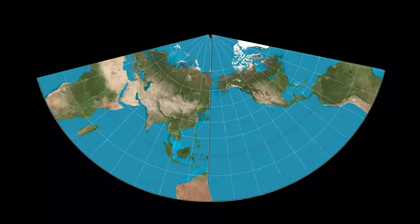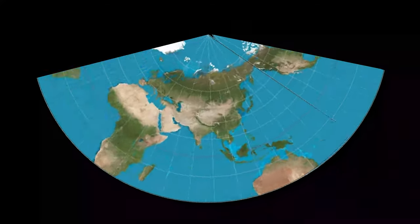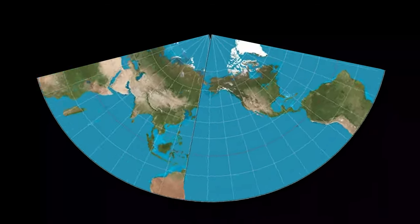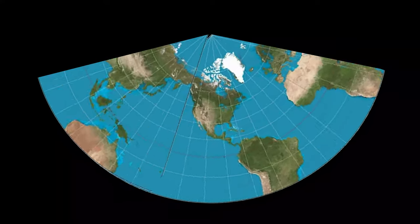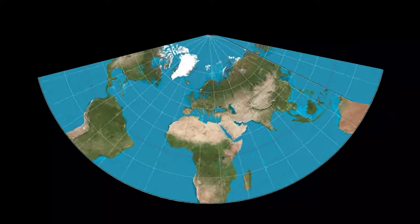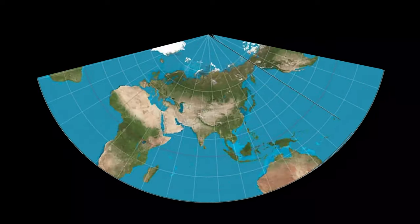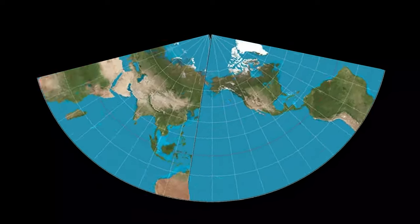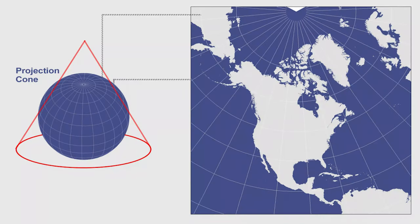For example, Canada's standard parallels are usually 49°N and 77°N. Furthermore, the State Plane Coordinate System (SPCS) uses LCC when zones have an east-west orientation.